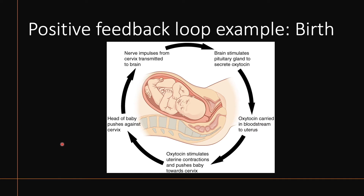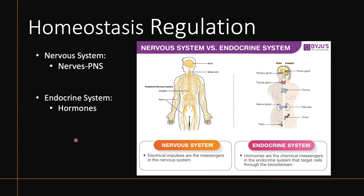An example of a positive feedback loop is birth. When someone is pregnant and full term, the baby's head pushes against the cervix, those impulses are transmitted to the brain, and the brain causes secretion of oxytocin, which is carried through the bloodstream to the uterus, stimulating more contractions — heightening and amplifying that initial stimulus and continuing to push it more until birth occurs. This is a positive feedback loop.